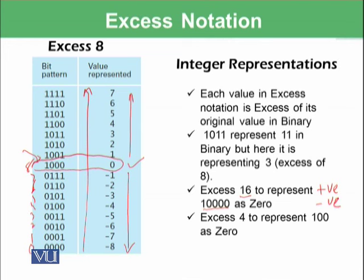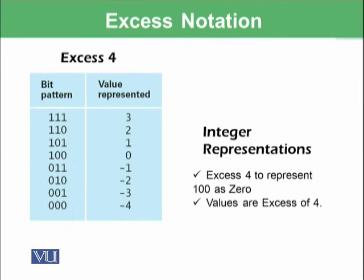Let's see the excess 4 to represent 100 as a 0. Here you can see that we have the excess 4 notation where again we have written from 0 upward and wherever we have found this 1 in the most significant bit that is representing the value 0, and the following one for the positive and the preceding one for the negative numbers.